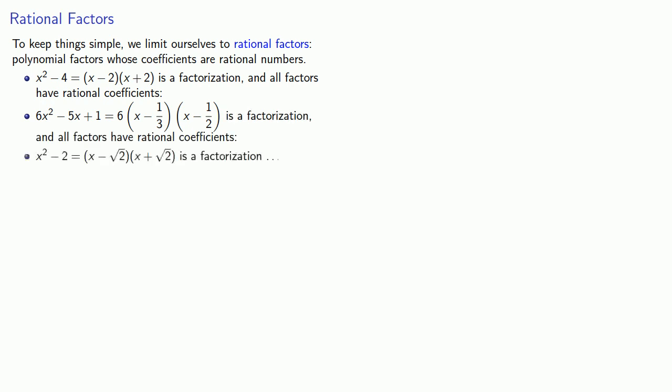x squared minus 2 can be written as x minus square root 2 times x plus square root 2. Well, this is a factorization, but the factors do not have rational coefficients. If a polynomial can be written as a product of rational factors, we say it is factorable.